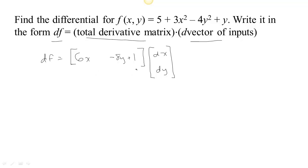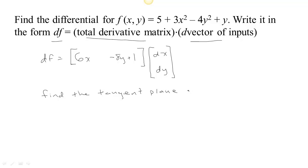If we were going to use this to find the tangent space, we would need a particular point so that we would know what the slopes are at that particular point. Since this is a surface, we're going to find the tangent plane at a particular point.